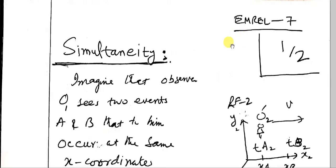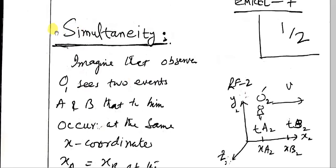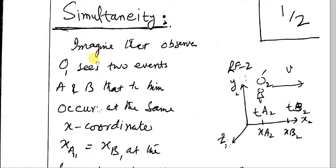Dear students, today's topic is simultaneity. The topic is EMREL-7 and we are in the special theory of relativity. This is a very interesting phenomenon of simultaneity. Imagine that observer O1 sees two events.